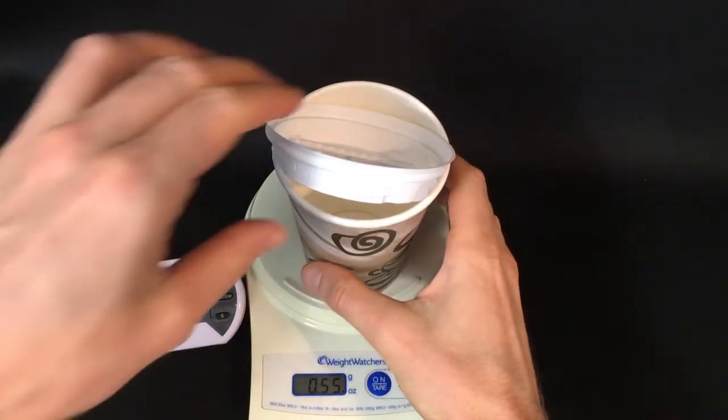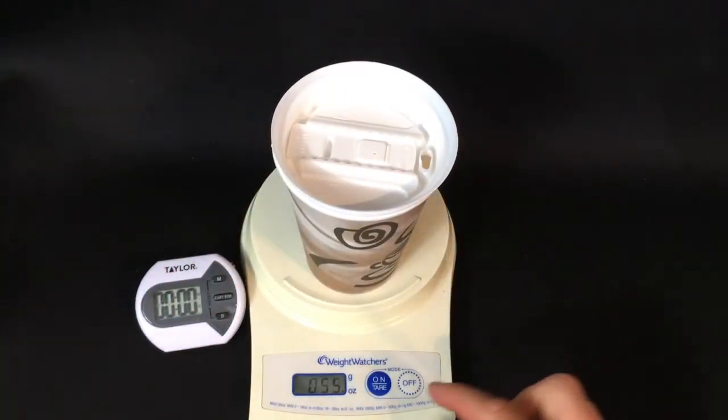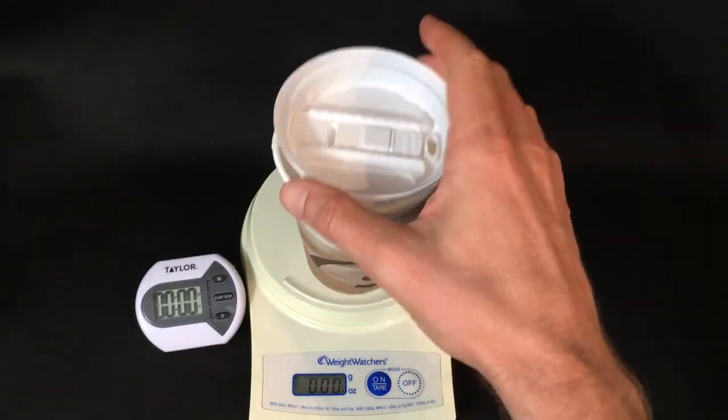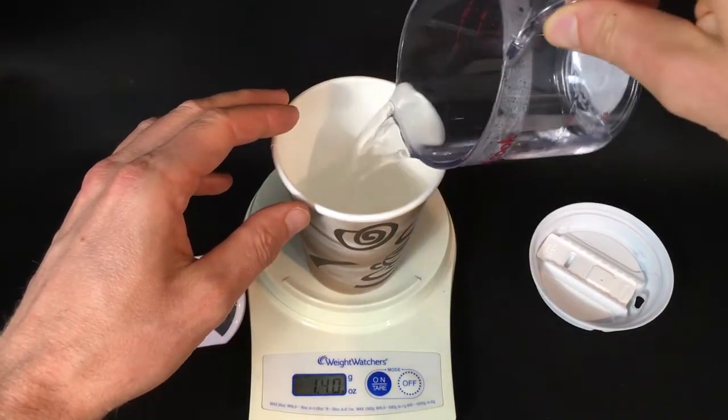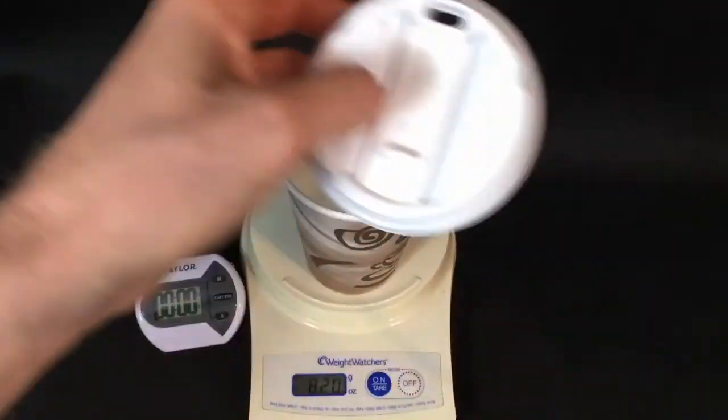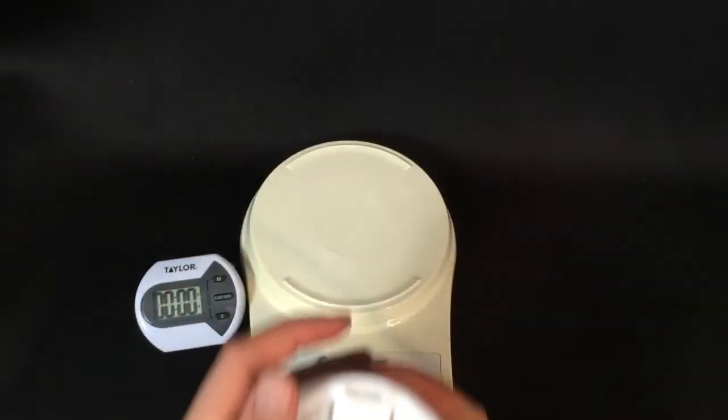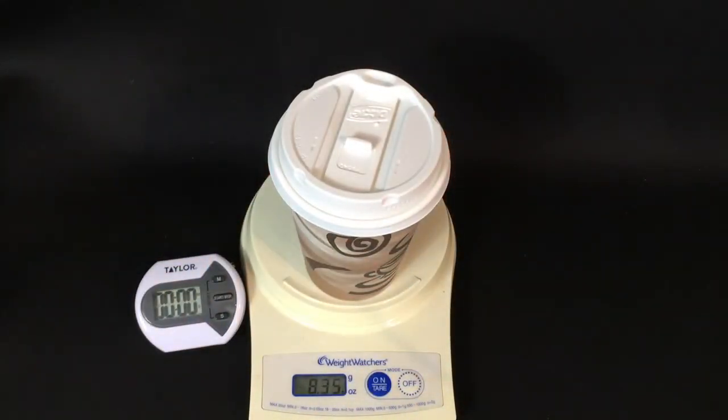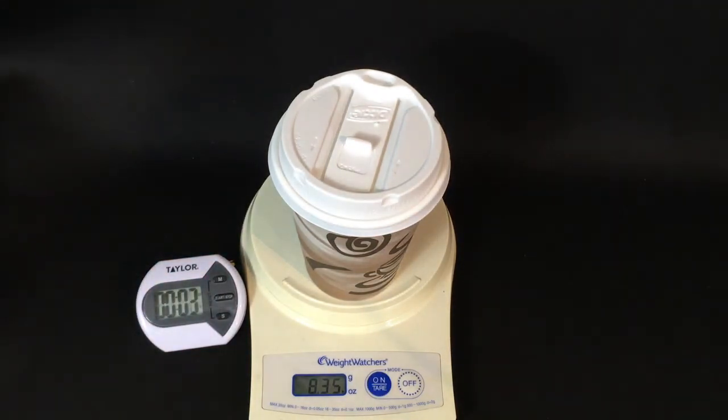This is a coffee cup with a lid, so we're going to test it this way now. With both of them on here, we'll tare the scale so we're at 0.00 ounces. We'll put the same temperature and the same amount of water into this coffee cup. We'll put our lid on and check our weight. We are looking at 8.35. We'll start our timer.